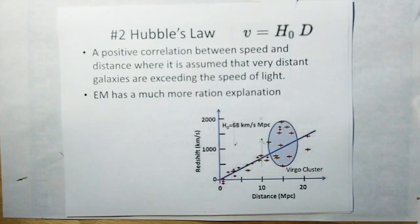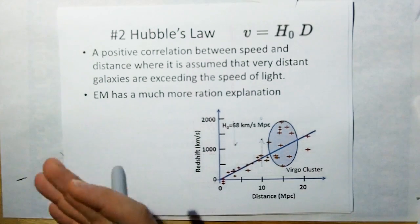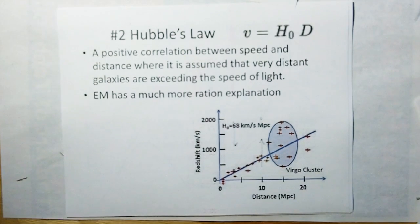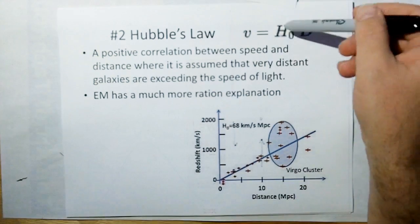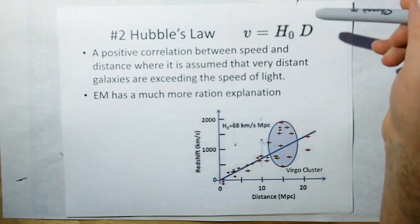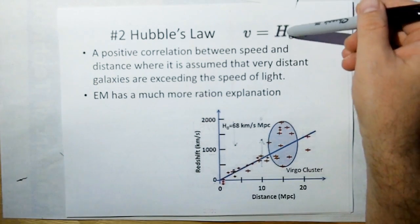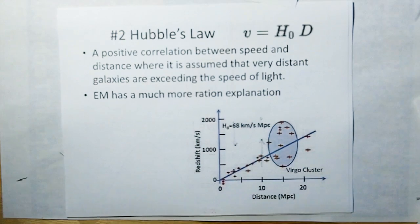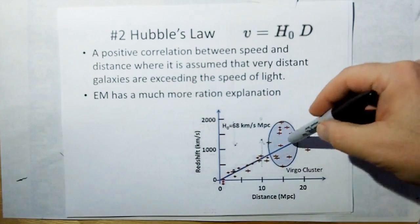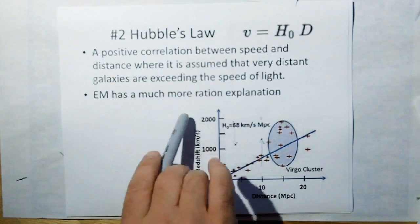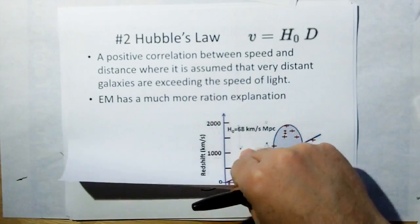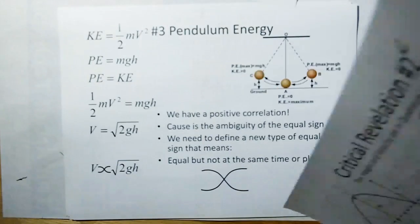Hubble's Law states that galaxies that are farther and farther away travel faster. The relationship is: distance times the Hubble constant equals the velocity of the object — they have a chart for it. And again, this violates the 21st Rule of Acquisition. I don't believe it. I have a better explanation in theorem mechanics, which is a lot more salient and sane.